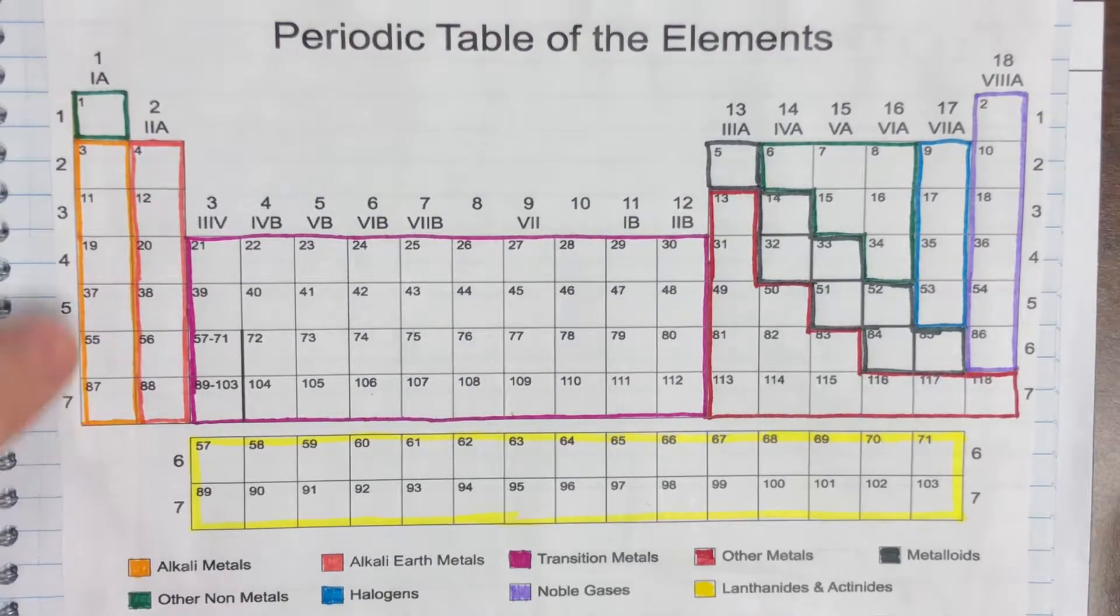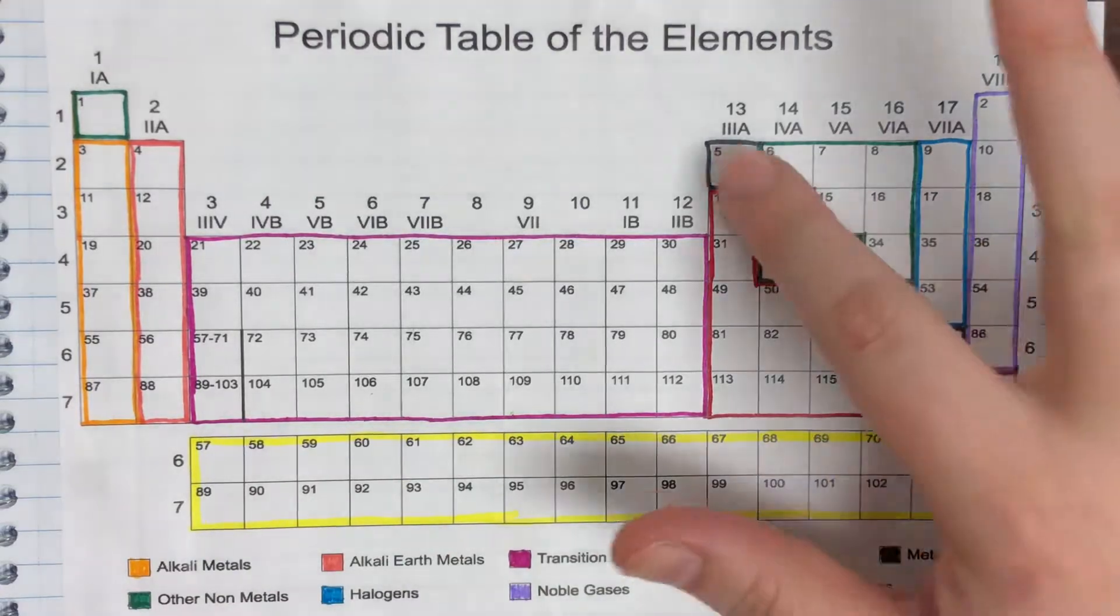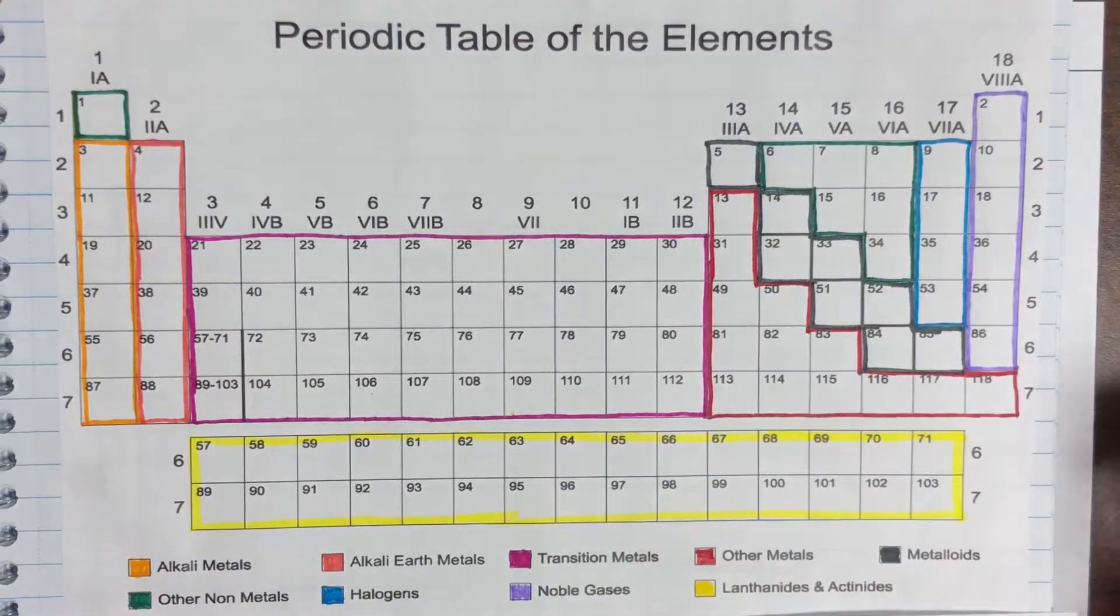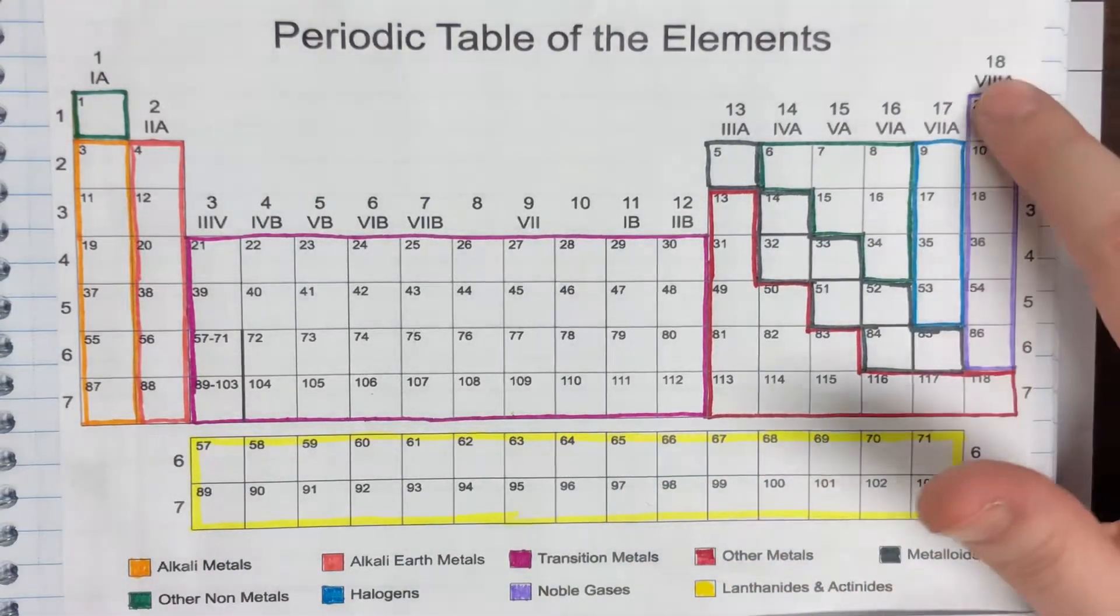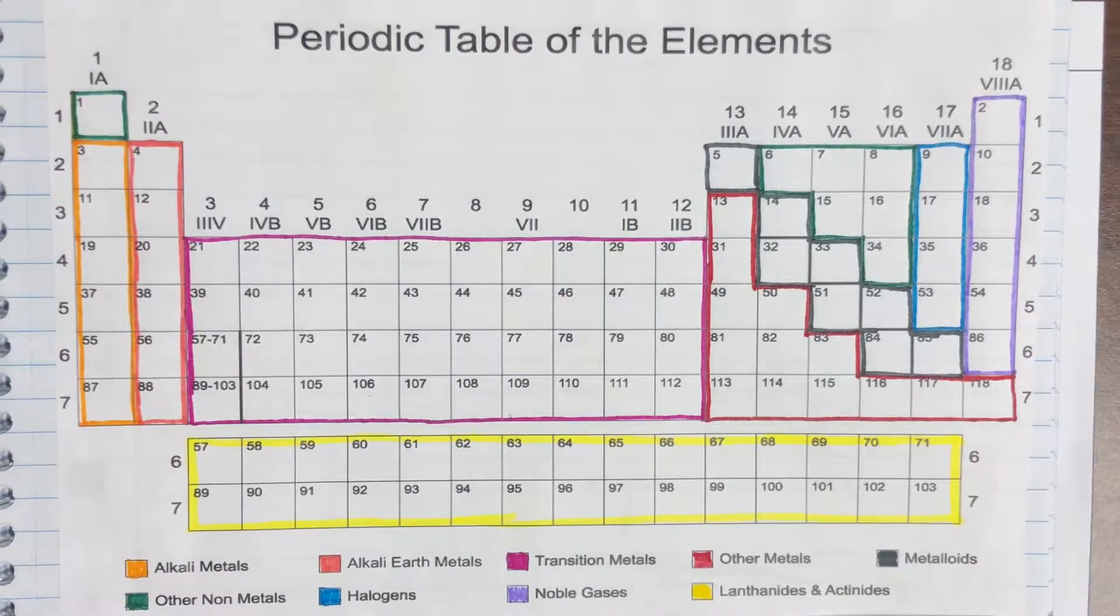Here we have the alkali metals, alkaline earth metals, transition metals. On this stair step we have our metalloids, halogens, and noble gases. These are going to be the main families.